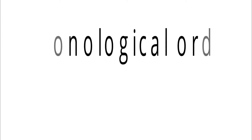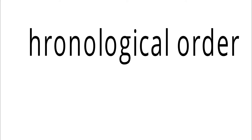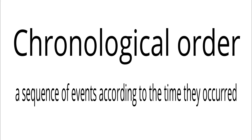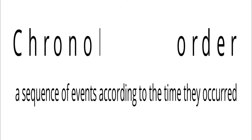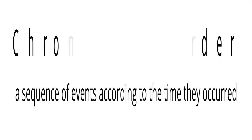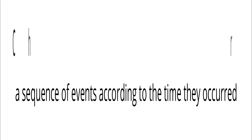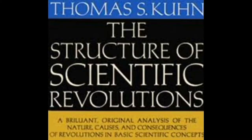Chronological order is a way of arranging events according to the time they occurred. It is demonstrated by showing what happened first, what went on next, and what came about in the succeeding occurrences.